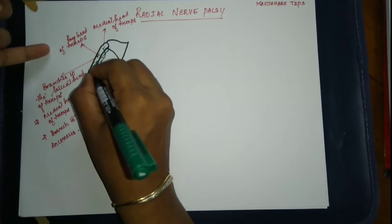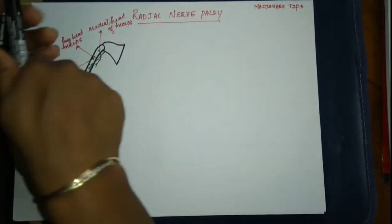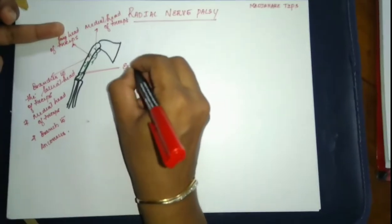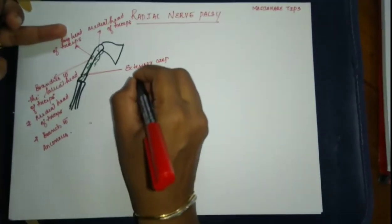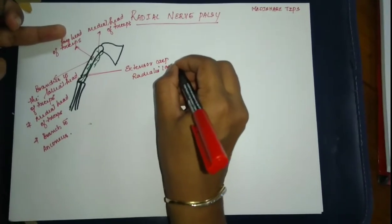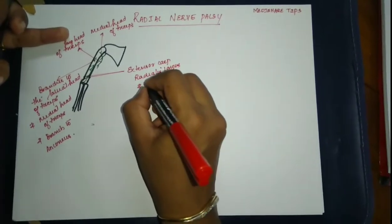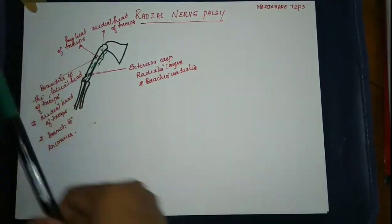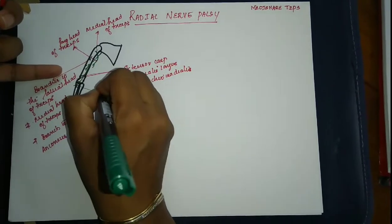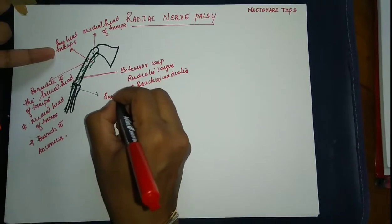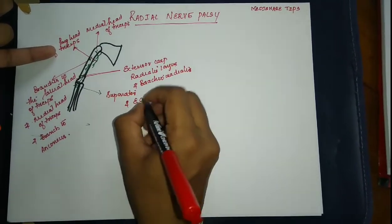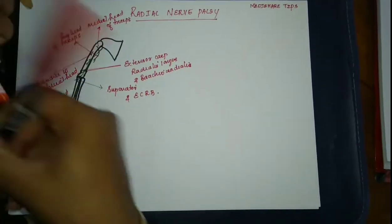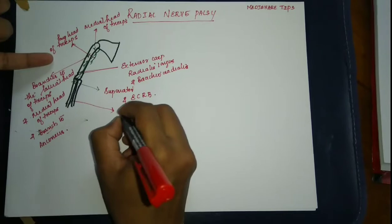Before reaching the elbow, the radial nerve gives off two branches: to the extensor carpi radialis longus and to the brachioradialis. After the elbow, it supplies two branches — to the supinator and extensor carpi radialis brevis. After piercing the supinator, it goes to the posterior compartment of the forearm and continues as the posterior interosseous nerve.